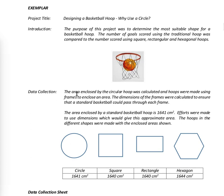Data collection. The area enclosed by the circular hoop was calculated, and hoops were made using frames to enclose an area. The dimensions of the frames were calculated to ensure that a standard basketball could pass through each frame. The area enclosed by a standard basketball hoop is 1,641 centimeters squared. Efforts were made to use dimensions which would give the approximate area.